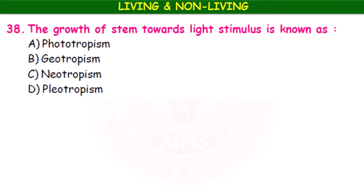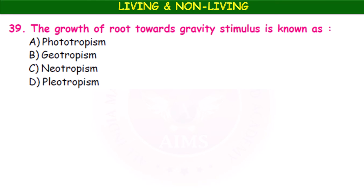The growth of the stem towards a light stimulus is known as phototropism. The growth of roots towards the gravity stimulus is known as geotropism. Roots are positively geotropic and negatively phototropic, whereas the stem is positively phototropic and negatively geotropic.